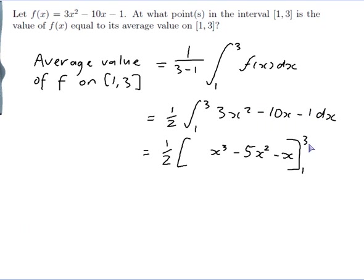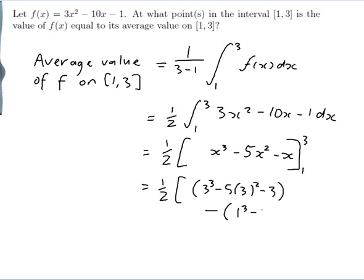Now I substitute 1 and 3 into the antiderivative and subtract. This equals one half times [3 cubed minus 5 times 3 squared minus 3] minus [1 cubed minus 5 times 1 squared minus 1].